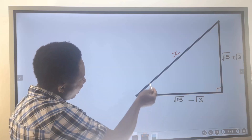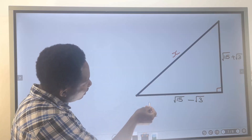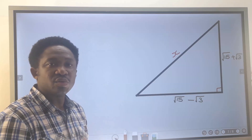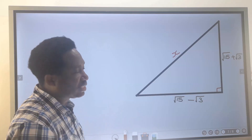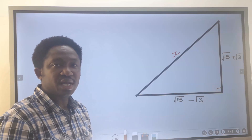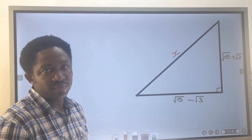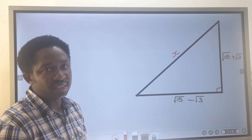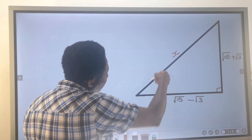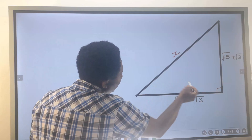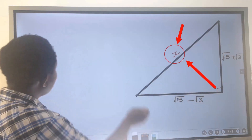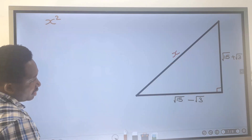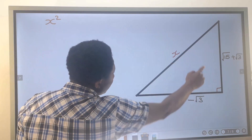Let's find the value of x in this right angle triangle. Because we are not concerned about the internal angles, we're going to consider Pythagoras' theorem. The first step is to identify the longest side — the side facing the right angle — and here we're going to write x squared.